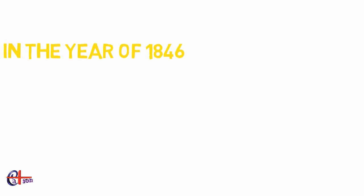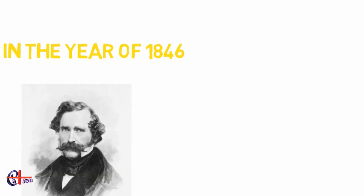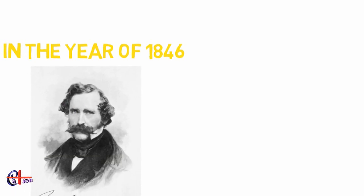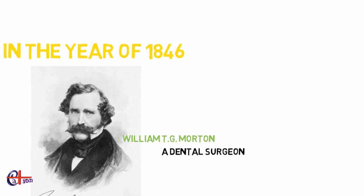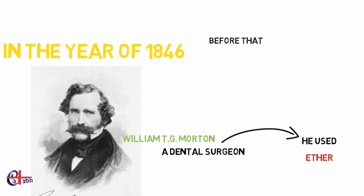Here comes the concept of anesthetics — an anesthetic can perform all these functions at once. Before 1846, many people tried to create anesthesia in patients before surgery, but the first successful attempt was by William T.J. Morton, a dental surgeon. He used ether as an anesthetic for surgery at MGH on patient Edward Gilbert Abbott.